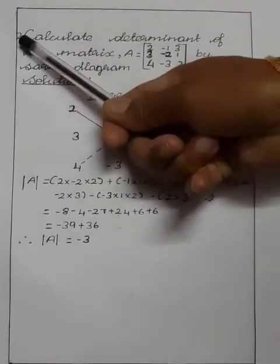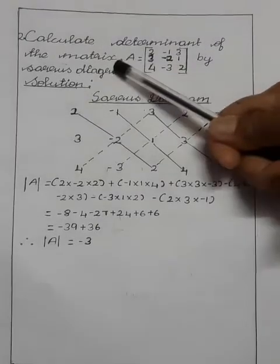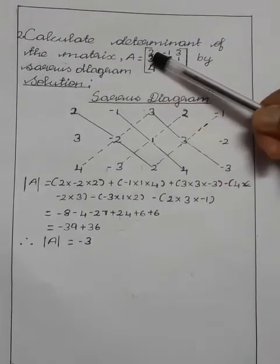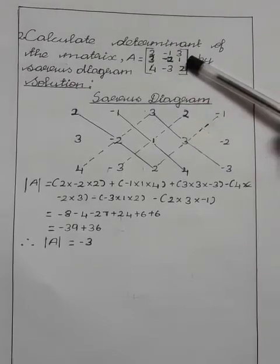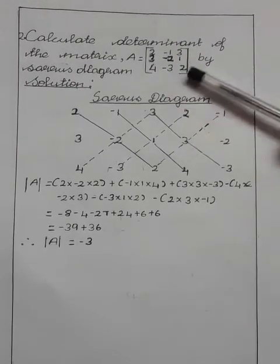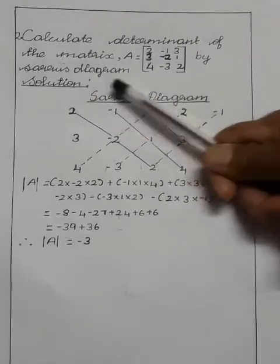Second sum: Calculate determinant of the matrix A is equal to 2, minus 1, 3, 3, minus 2, 1, 4, minus 3, 2, by Sarrus diagram.